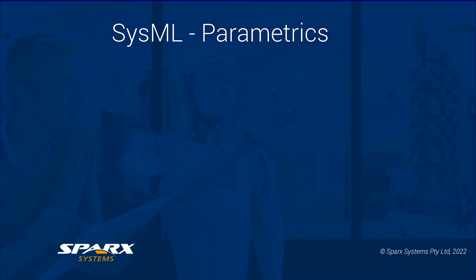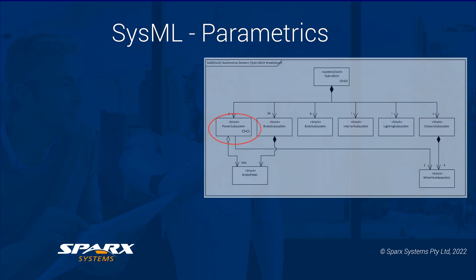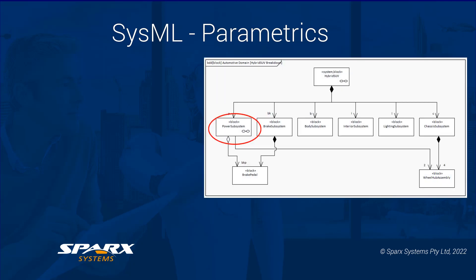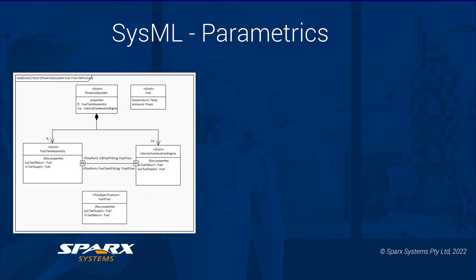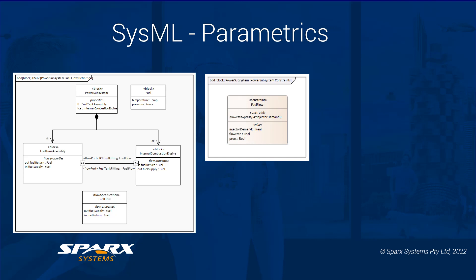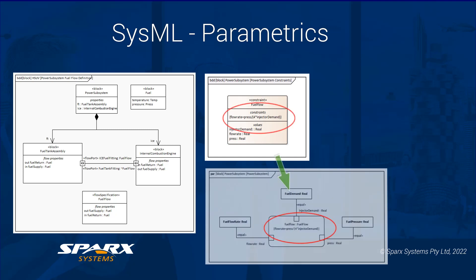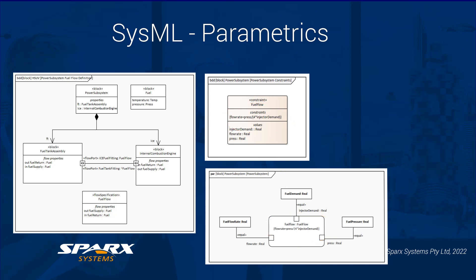The parametric diagram is meant to enforce the rules that are defined in the constraint blocks, in particular for the mathematical equations that are to be used. Looking back at the block definition diagram covering the power system, we have a subsidiary block definition for the fuel flow definition. Related to this is the fuel flow constraint that we just created. We can see that these equations are used in the parametric diagram, which ties these mathematical rules using ports and binding connectors — in other words, keyword equals — between the constraint block equation and its parameters, with the part value properties on the parametric diagram.